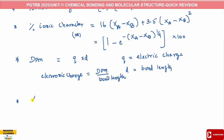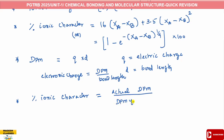Percent ionic character can also be calculated from dipole moment. It is equal to the actual dipole moment divided by the dipole moment of the pure ionic compound, multiplied by 100. The dipole moment of the molecule is related to the pure ionic dipole moment.